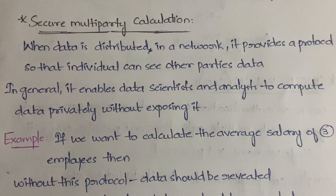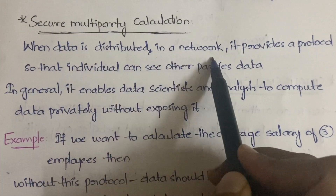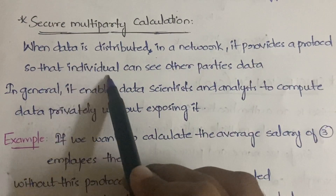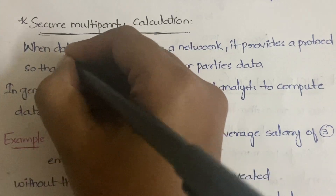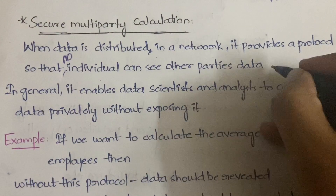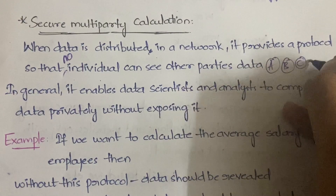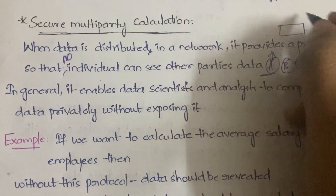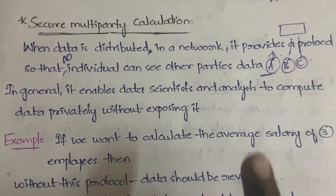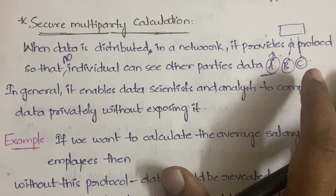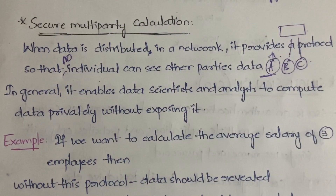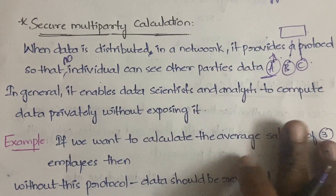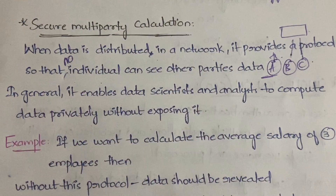When data is distributed in a network, this protocol ensures that no individual can see other parties' data. For example, suppose we have parties A, B, and C. Each is giving some data to a central department, but the data A submits should only be known to A — B and C should not know anything about it. The same applies to B and C. This privacy can be achieved with secure multi-party computation.